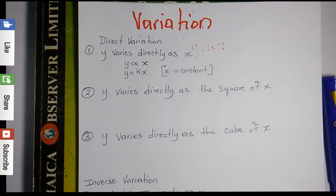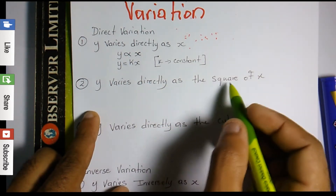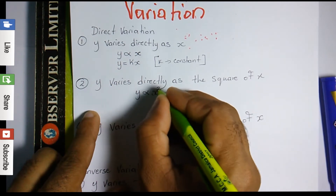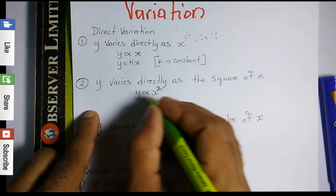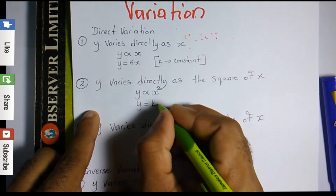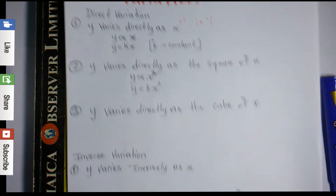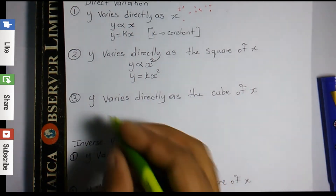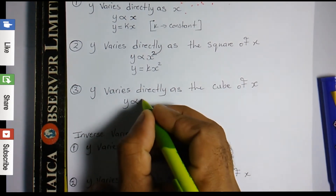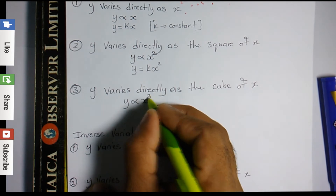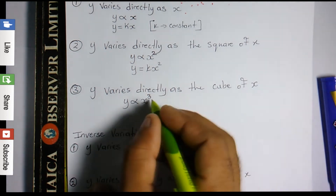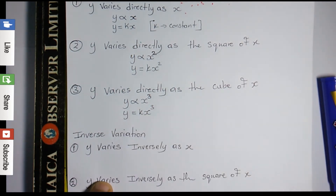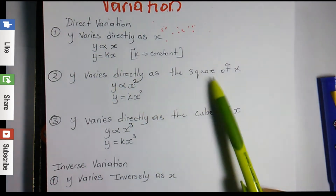For the second phrase, 'y varies directly as the square of x,' we write y equals kx squared. I use k for the constant because most times in the exam they tell us to use k. For the third one, 'y varies directly as the cube of x,' our equation will be y equals kx cubed. That is how we convert direct variation word phrases into equations.